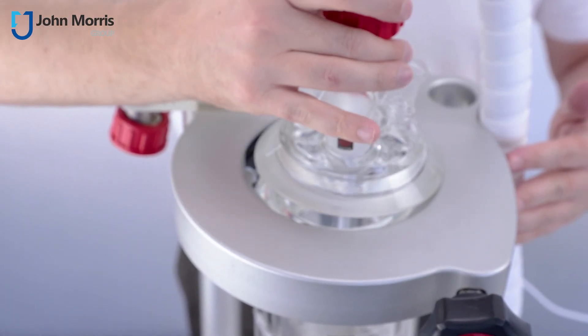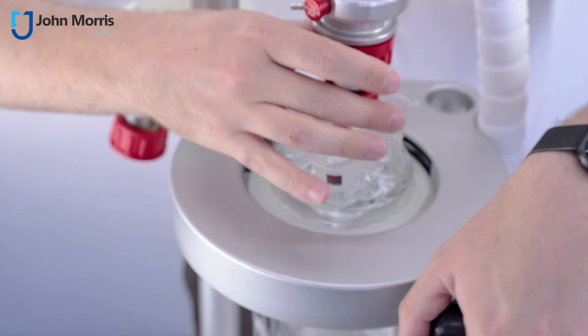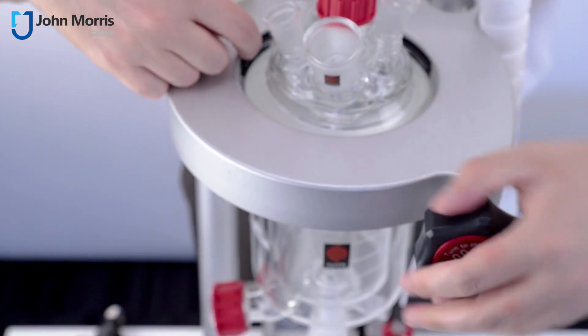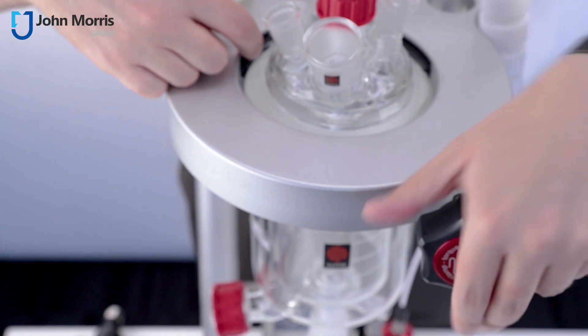So the lid goes on just like this and tightens here from the front, and you can see these three teeth coming in to secure the lid to the actual vessel.